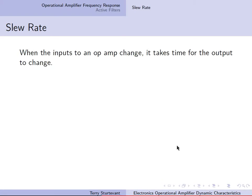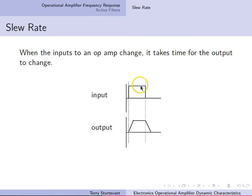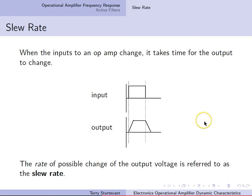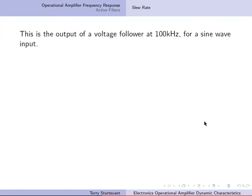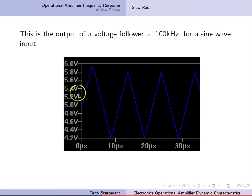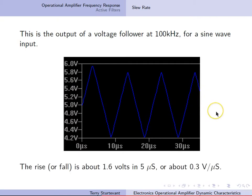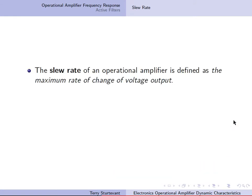Another factor in op-amps is called the slew rate. When the inputs to an op-amp change, it takes time for the output to change. With a square wave input, the output will take a finite amount of time to reach the output voltage, and then a finite amount of time to fall again. The rate of possible change of the output voltage is referred to as the slew rate. Here's the output of a voltage follower at 100 kHz for a sine wave input — the sawtooth shape represents the slew rate of the amplifier. The rise or fall of about 1.6 volts happens in about 5 microseconds, giving a slew rate of about 0.3 volts per microsecond. The slew rate is defined as the maximum rate of change of voltage output, and it's usually given in volts per microsecond.